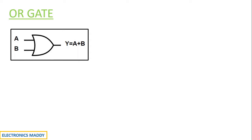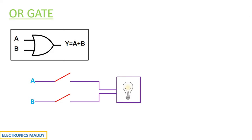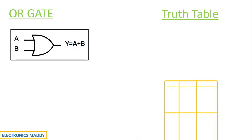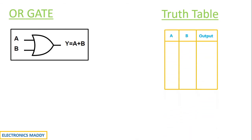Let us consider a typical example in order to understand this, where we have two switches connected in parallel to a light load in this particular fashion. Since A and B are open circuited, it corresponds to a state of 0 and the light does not glow because both are open circuited. The truth table corresponding to it is given as: when A and B is equal to 0,